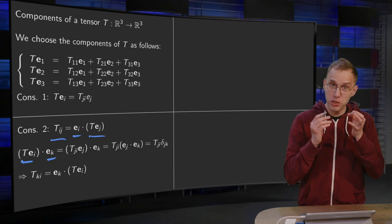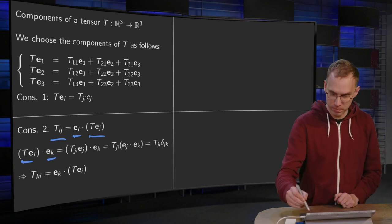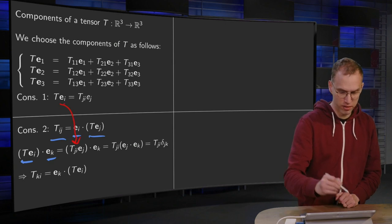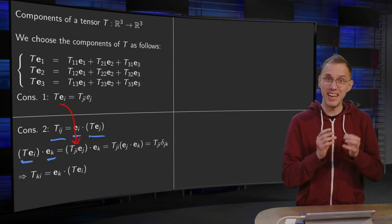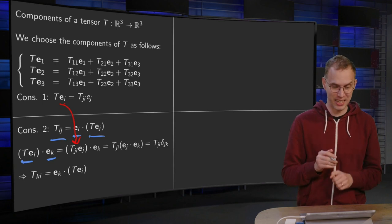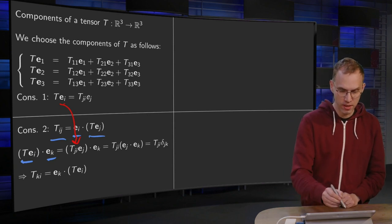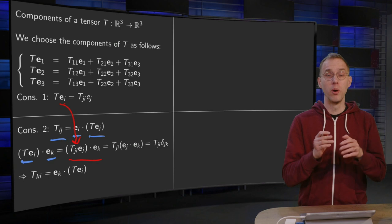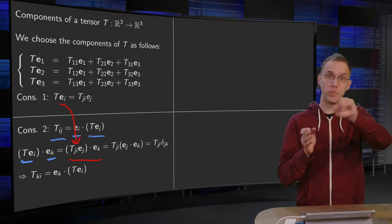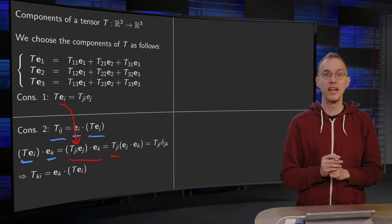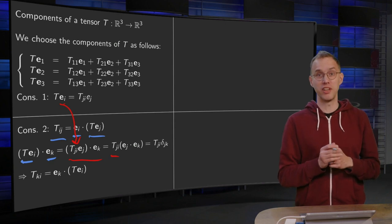We'll first compute the inner product T of EI inner product with EK. Then we substitute the consequence one, we had T of EI over there, so that T of EI equals TJI EJ inner product EK. Well, the TJI's are just numbers so you can take them in front, so that's what's happening over here.